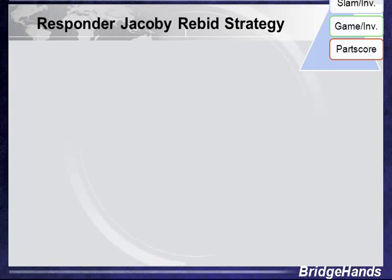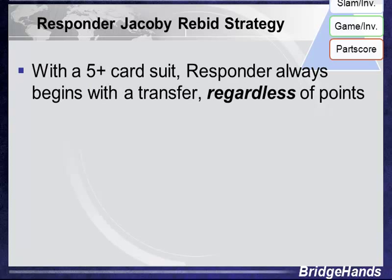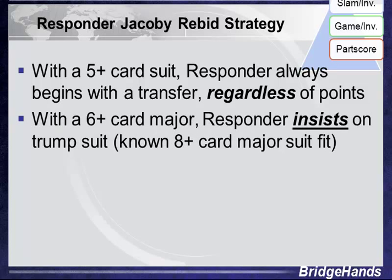Before we start bidding Jacoby no trump responses, let's talk about rebidding strategy by the responder. With a five-card suit, responder always begins with a transfer bid, regardless of point count. With a six-card major or longer, responder always bids and then rebids that suit, insisting on it as trump — because if they have six cards and opener promises at least two, the partnership has an eight-card fit and should play in trump, not no trump.